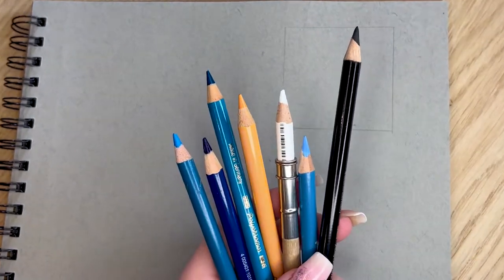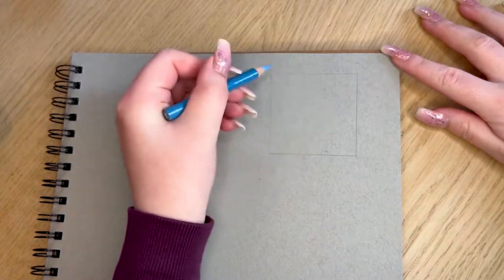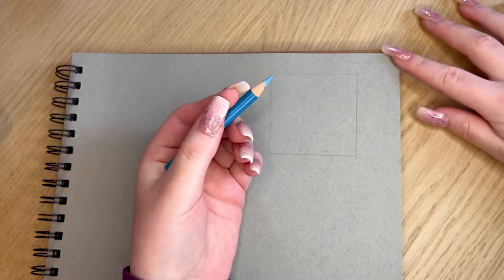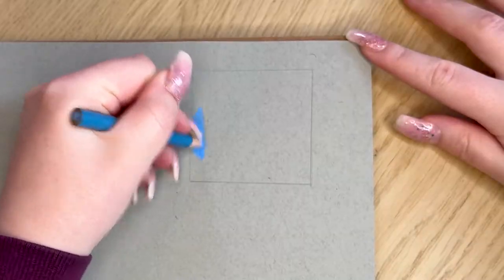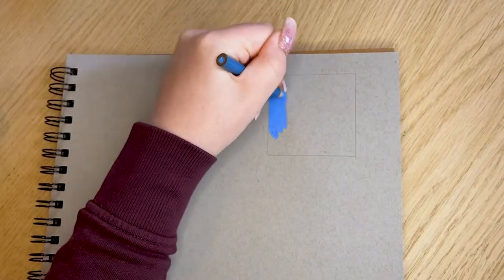What you're gonna want to do first is completely fill this entire thing with your light blue. You don't need to apply tons and tons of pressure, you just need to cover the entire thing.